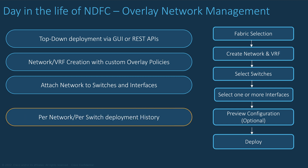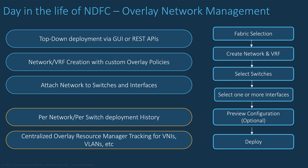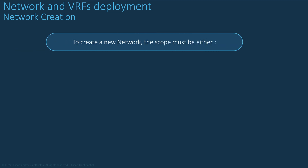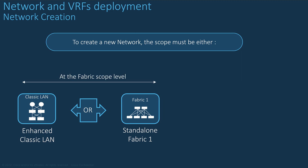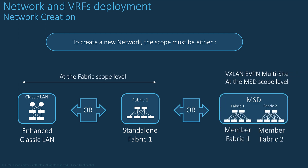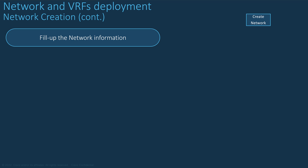After the networks have been deployed, you can preview the historical deployment per network and per switch. The resource manager continuously tracks VNIDs and VLAN IDs, so NDFC is always aware of what has been consumed, even when you use your own VLAN ID. NDFC centralizes tracking of all deployments, including Overlay Networks, in the Fabric Builder. To create a network, the scope must be either a standalone fabric or a multi-site domain if the fabric belongs to the multi-site domain.